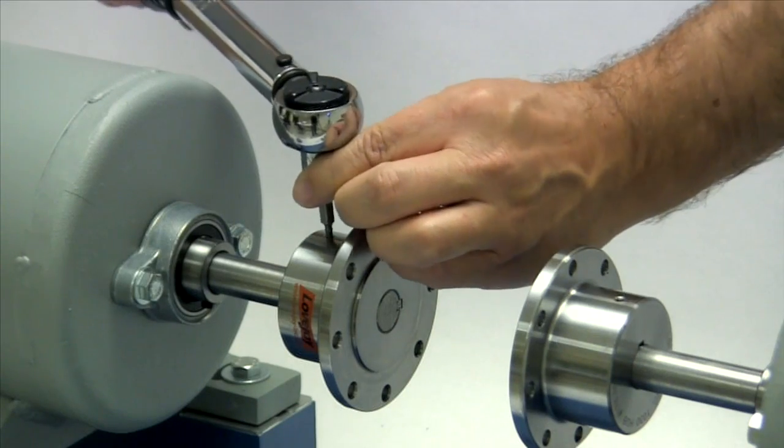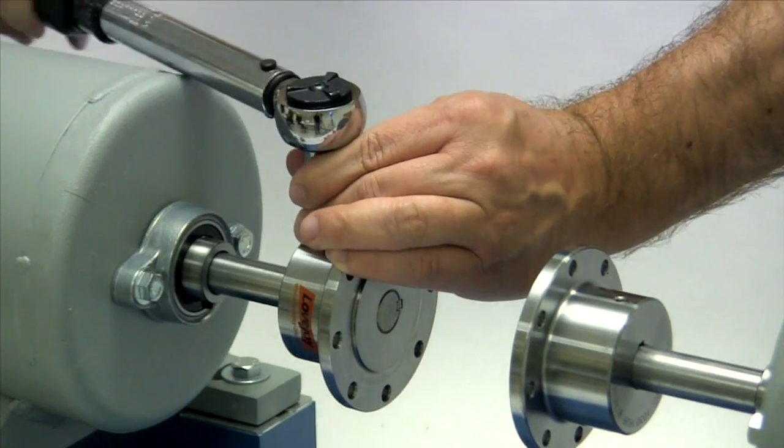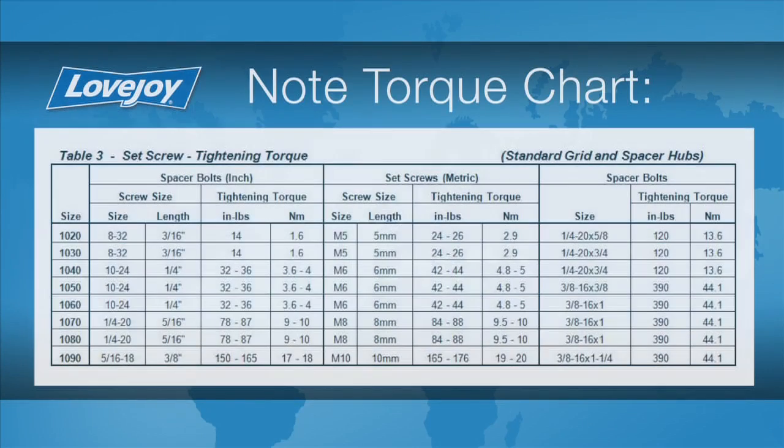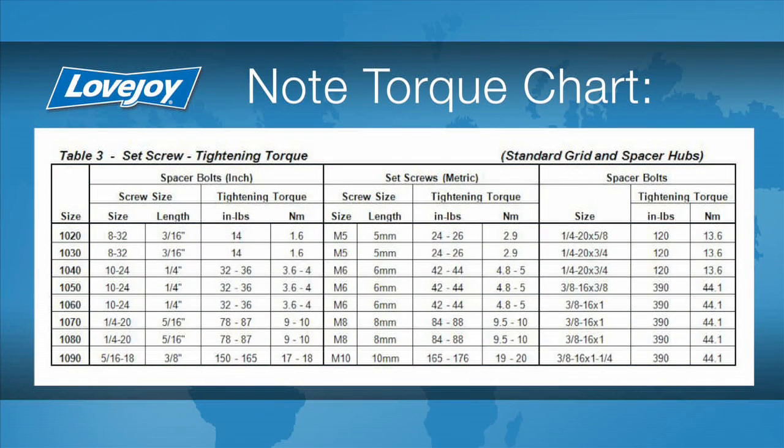With the torque wrench, we will tighten the set screws in both hubs to the torque specified in the installation guide. The use of a torque wrench is important. If the set screws are not tightened enough, the hub could work loose and slide on the shaft. If the set screws are too tight, they could damage the key, the shaft, or the hub.